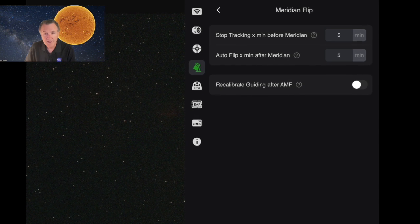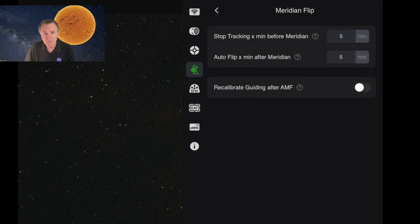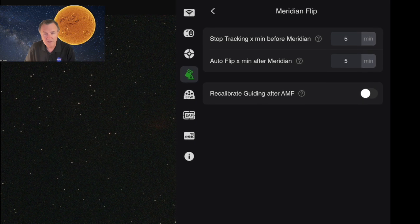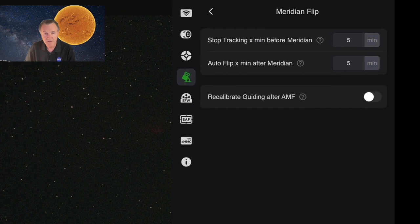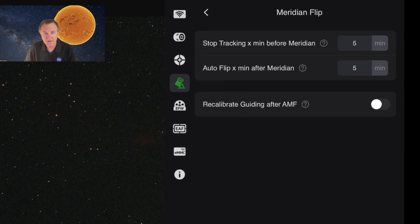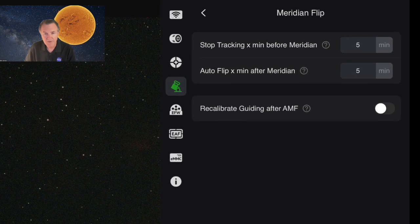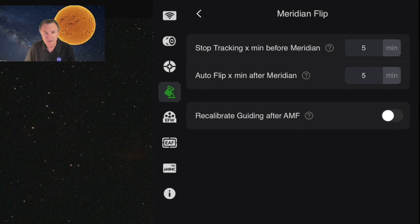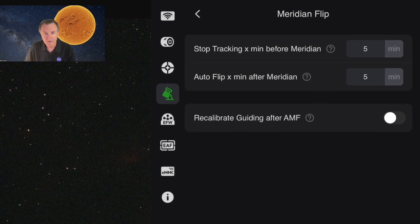What you could do is get the scope slewed close to the meridian and see how close the bottom of your telescope is to the tripod and assess any risk. And then you can set the ASI Air such that it will stop guiding when it gets within so many minutes of the meridian, and then it will flip after that.